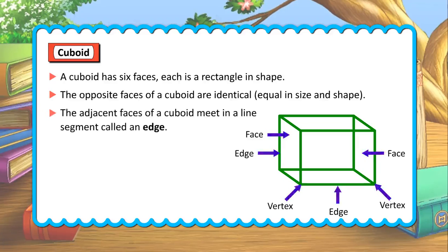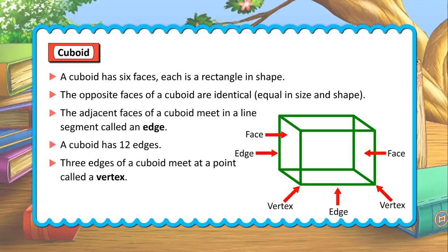The adjacent faces of a cuboid meet in a line segment called an edge. A cuboid has 12 edges. Three edges of a cuboid meet at a point called a vertex. A cuboid has eight vertices.